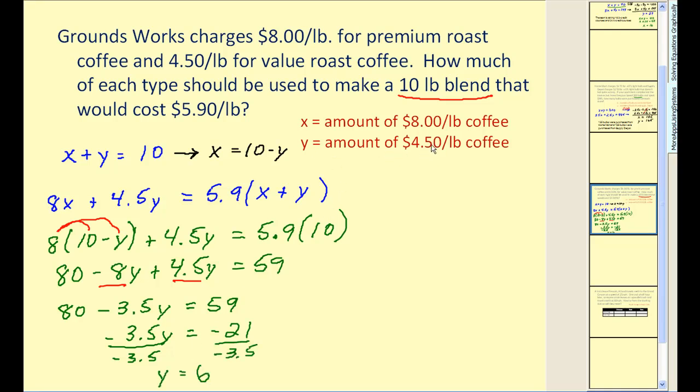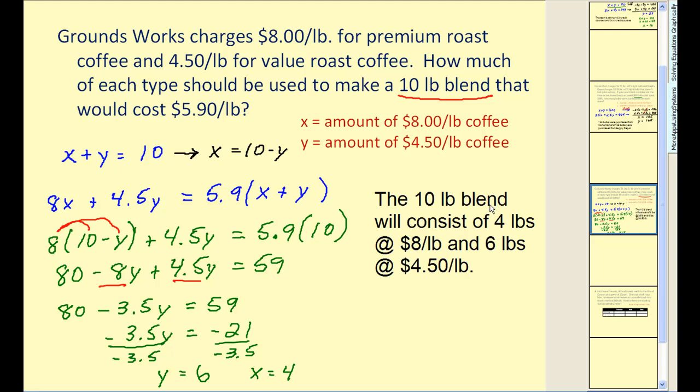So therefore we have six pounds at $4.50. We can do mental substitution here. Here x is equal to 10 minus y or 10 minus 6, so we can conclude that x equals 4. So we can conclude the 10 pound blend will consist of 4 pounds at $8 per pound and 6 pounds at $4.50 per pound.